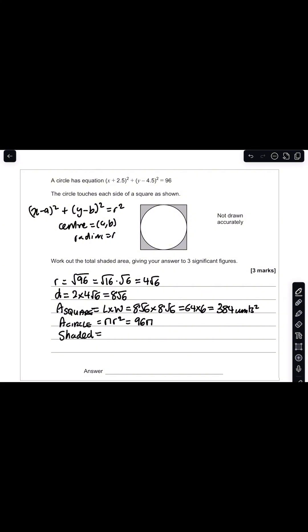Therefore the shaded area will just equal the difference between the area of the square and area of the circle. So it'll be 384 minus 96 pi. When you put that in your calculator, that gives you 82.4 units squared to three significant figures. So your final answer is 82.4 units squared.